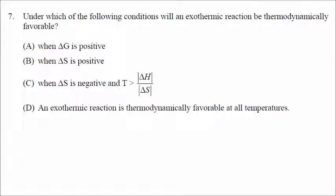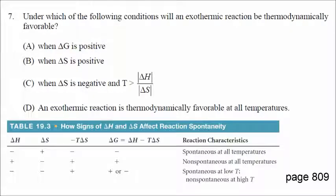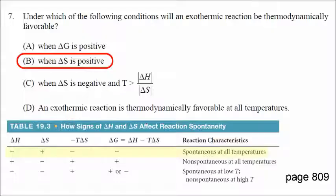Number seven: under which conditions will an exothermic reaction be thermodynamically favorable? If delta H is negative and delta S is positive, the reaction is favored at all temperatures. Another condition exists where if both delta S and delta H are negative, it's only favored at low temperatures. If the temperature exceeds the ratio of delta H over delta S, it would be non-spontaneous. So the correct answer — delta H negative and delta S positive leads to a favorable reaction. Number seven is B.